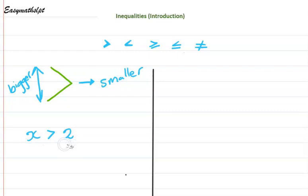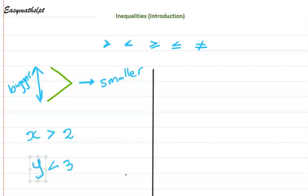And if you want to read it from the right to the left, then it would mean that 2 is less than x. Let's look at another one. Let's say we had y written like this. This reads y — remember, this is the small section — so it means y is smaller than 3. Or let's read it from the right: 3 is bigger than y.